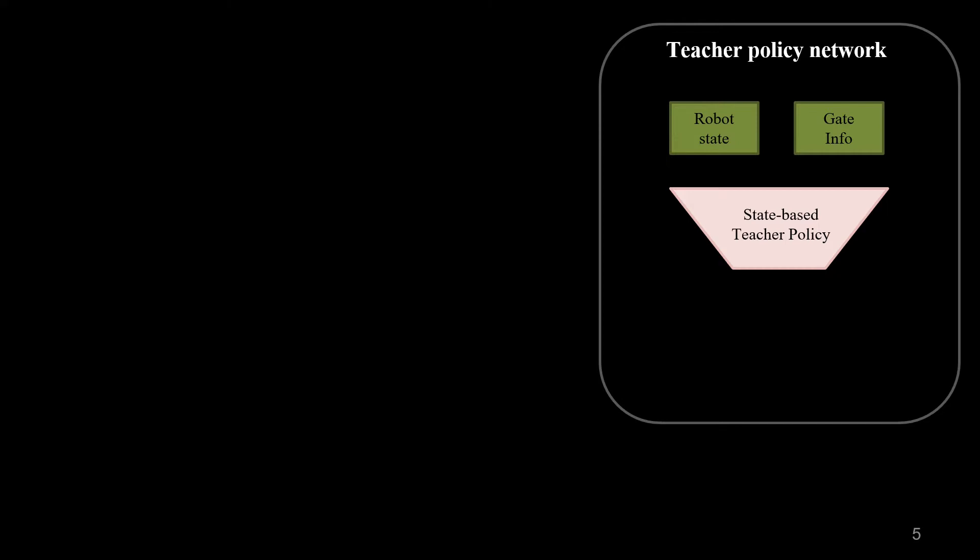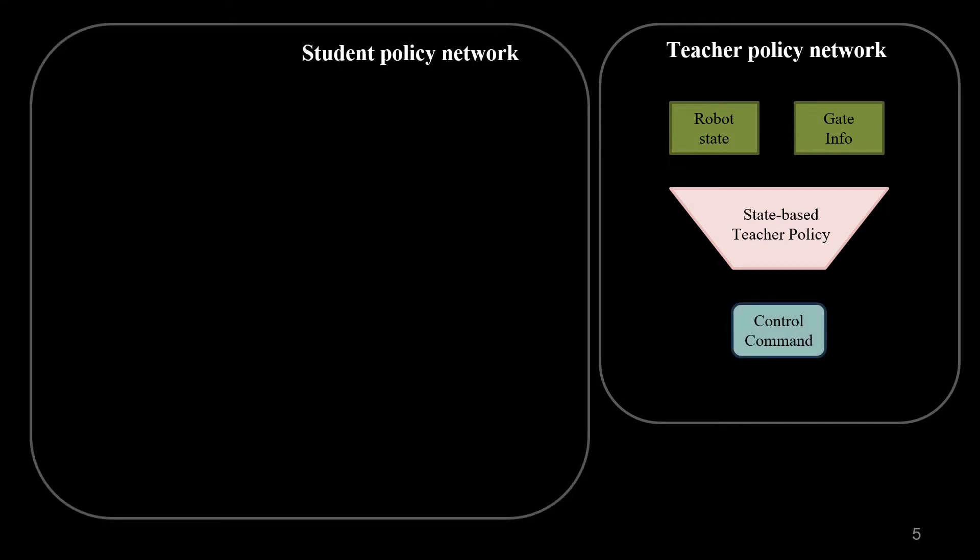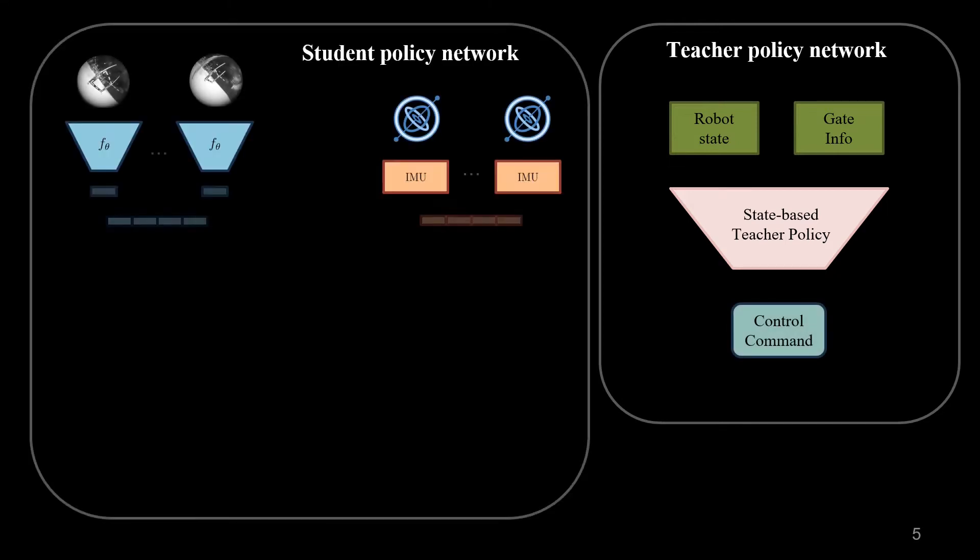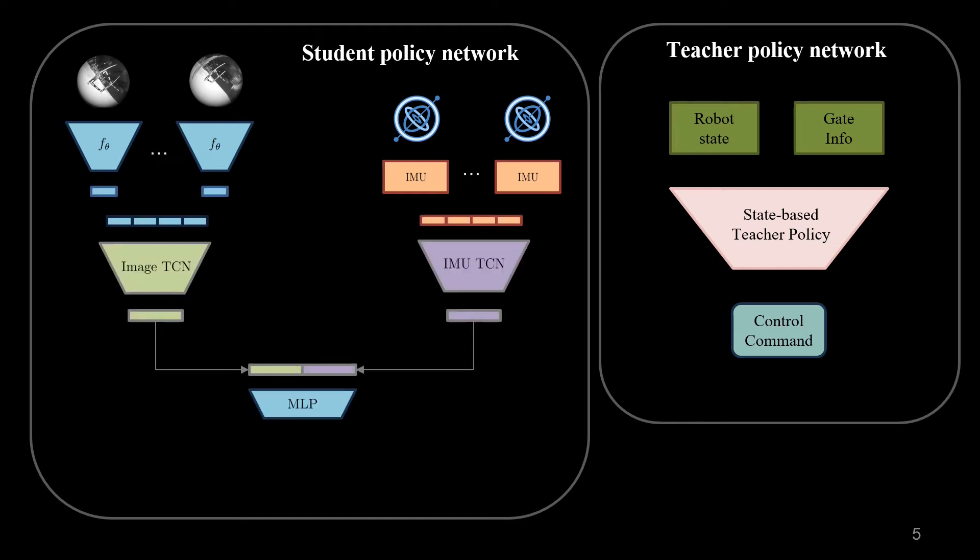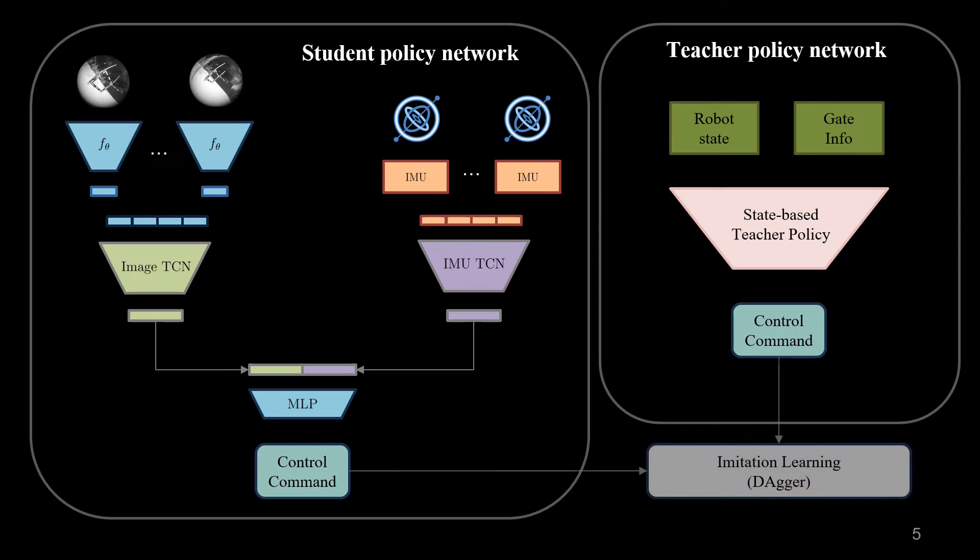After the vision encoder training, we employ a two-stage training procedure for policy learning. First we use model-free reinforcement learning to train a state-based teacher policy and then distill the policy using a student network that encodes a sequence of measurements to output the control command. The student is trained using imitation learning.